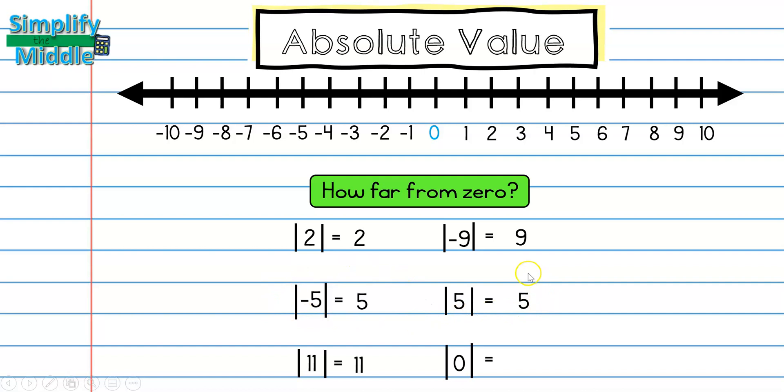This is an interesting example because we can see that we have the same answer with two different numbers because negative 5 and 5 are both the same distance from 0. They have the same absolute value.